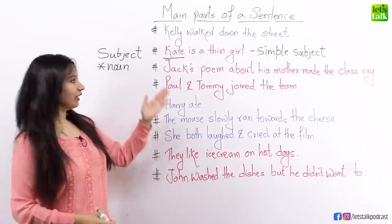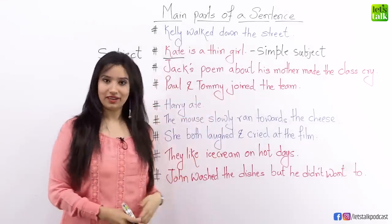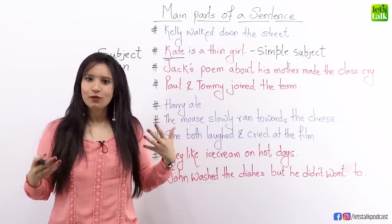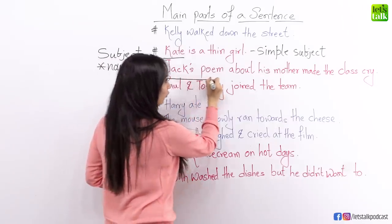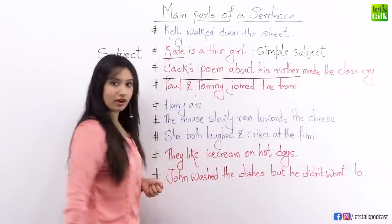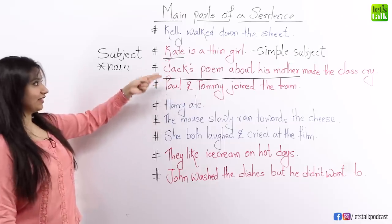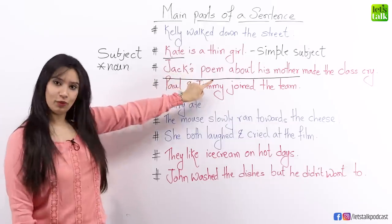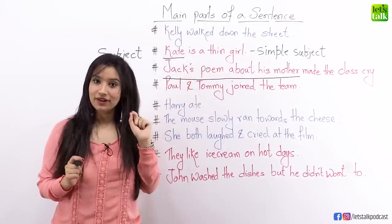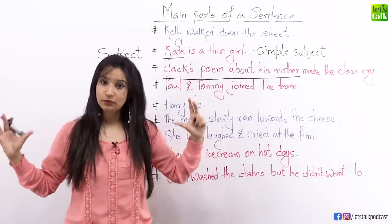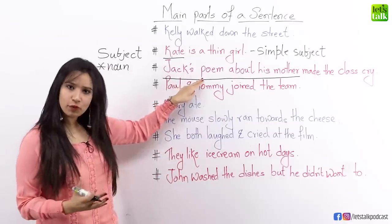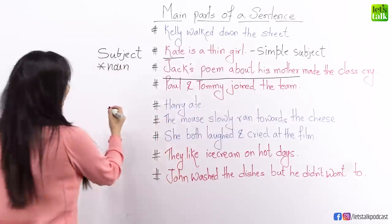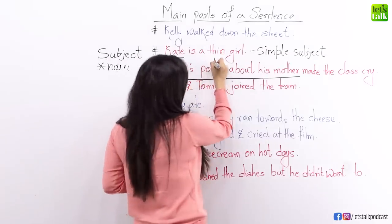Now let's look at the next sentence: Jack's poem about his mother made the class cry. What kind of question can you make? You could say, whose poem made the class cry? The answer is Jack's poem about his mother made the class cry. This is also a subject, but unlike just the name Kate, here we have the entire information about the poem — whose poem, and about whom. That's why it's not a simple subject but a full subject.